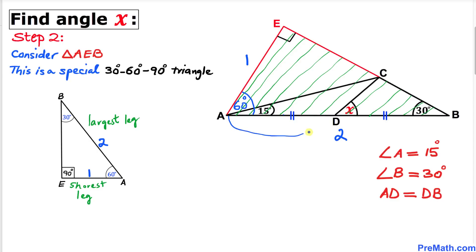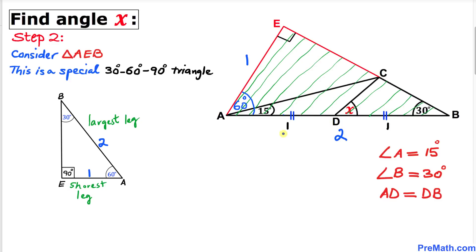We know that the whole side length AB is 2 units, and it has been divided into two equal parts by point D — one unit on each side. So we can see that AE, AD, and DB are all 1 unit in length, meaning all these sides are equal.